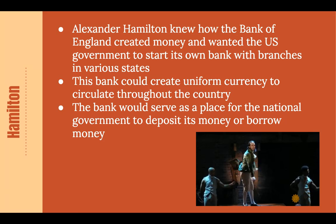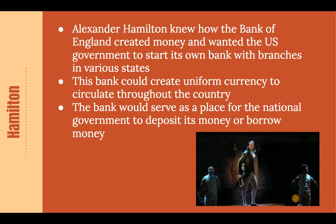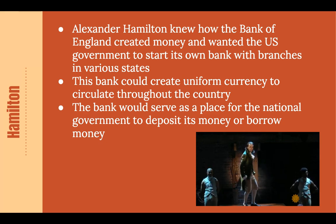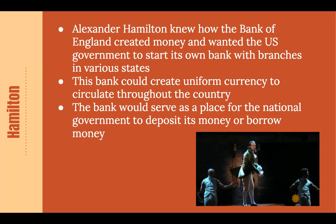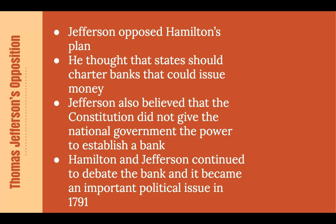Hamilton used the Bank of England for inspiration. He wanted the bank to create a uniform currency to circulate throughout the country. It would also serve as a place for the national government to deposit its money after taxes were collected, and also to borrow money — for example, in cases of war. Jefferson opposed Hamilton's plan. He thought that states should charter banks that could issue money on a state-by-state basis. Jefferson strongly believed the Constitution did not give Congress the power to establish a bank, and they continued to debate this for many years, ultimately becoming a major political issue in 1791.